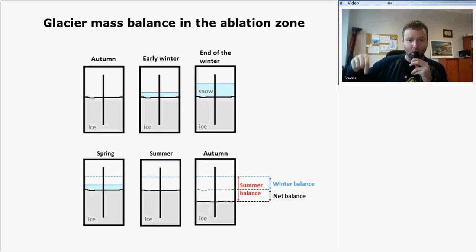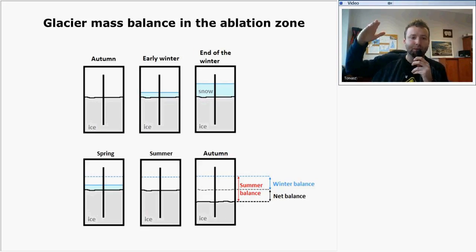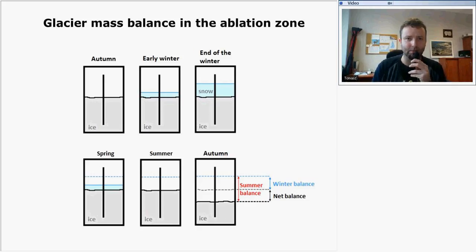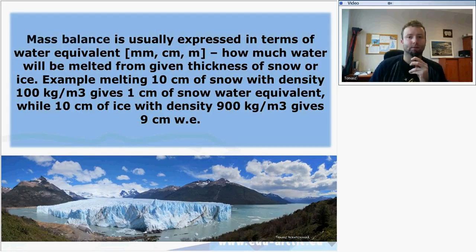In autumn, if we drill a hole in the glacier and put the ablation stakes there, they remain throughout the winter during which snow accumulates. At the end of winter there will be the highest accumulation of snow, and during spring this snow will melt away — and even ice in the ablation zone will melt. From this we get information about the mass balance of the glacier. Mass balance is usually expressed in terms of water equivalent: how much water will be melted from a given thickness of snow or ice.